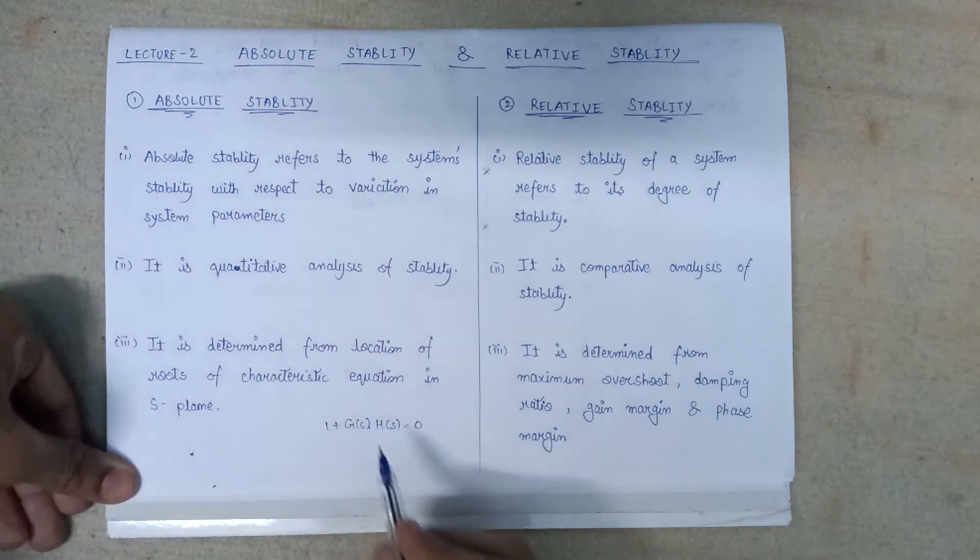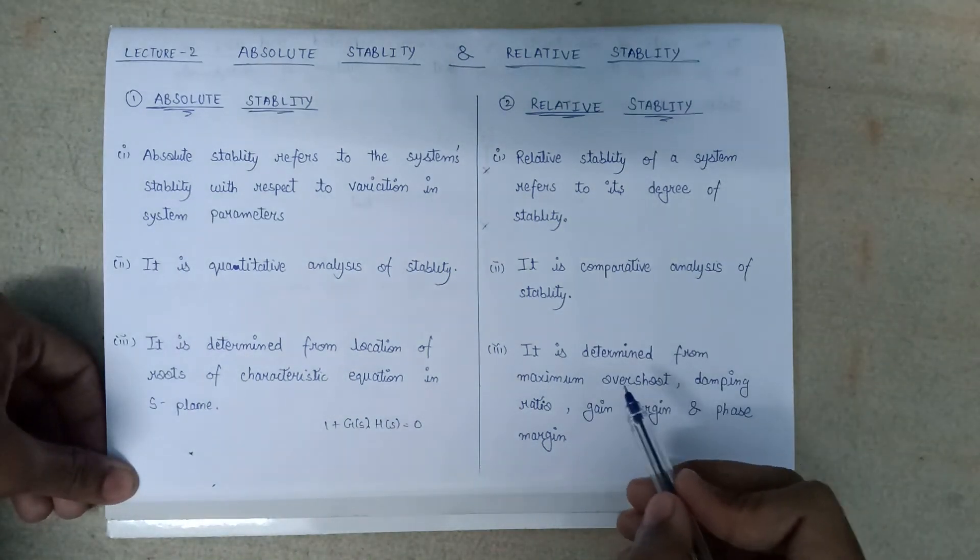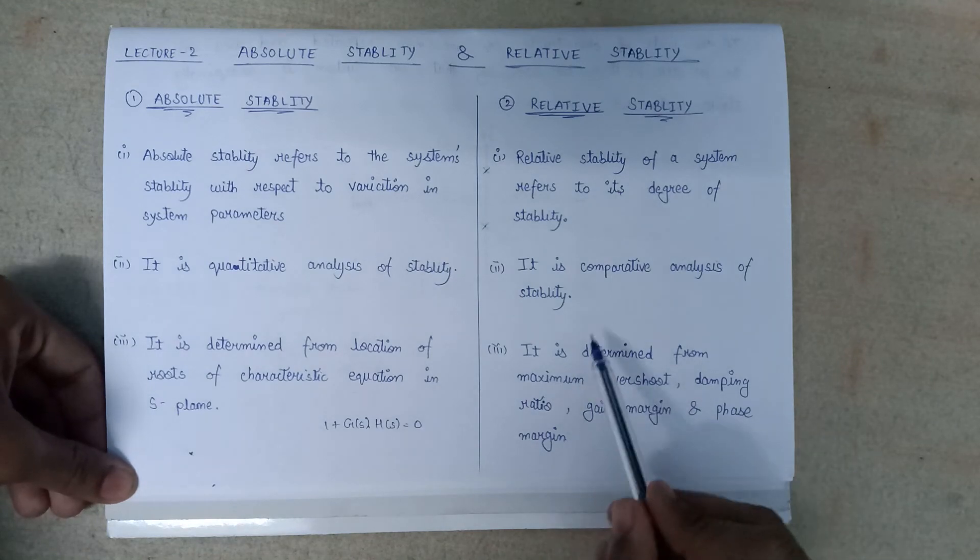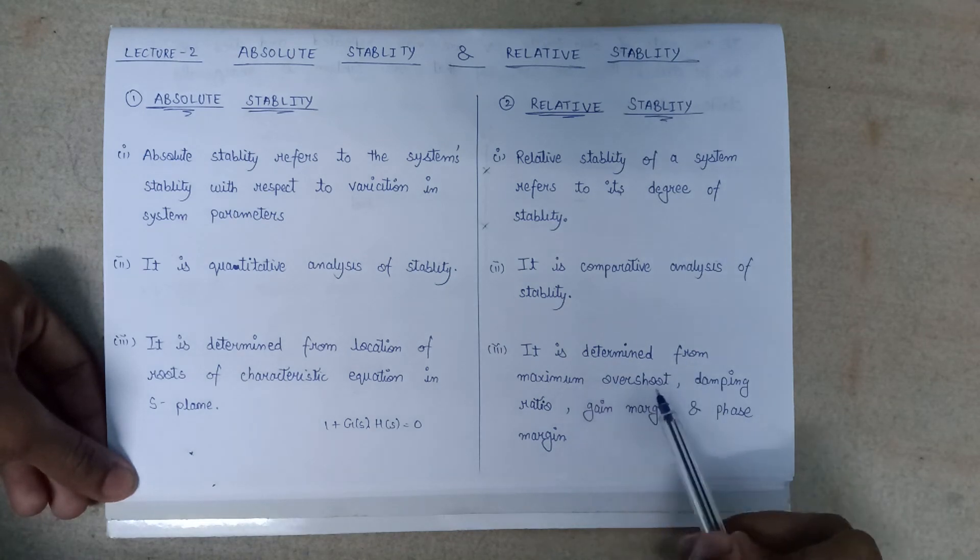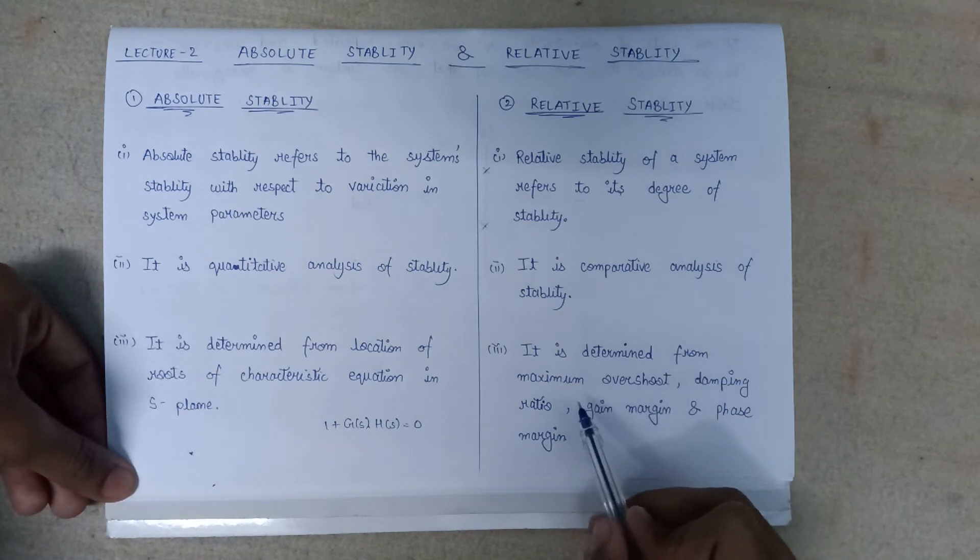Whereas on the other hand, the relative stability can be determined from various parameters like maximum overshoot, damped ratio, gain margin, and phase margin as well.